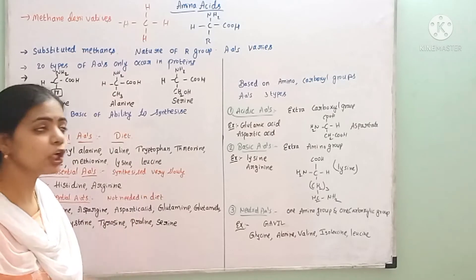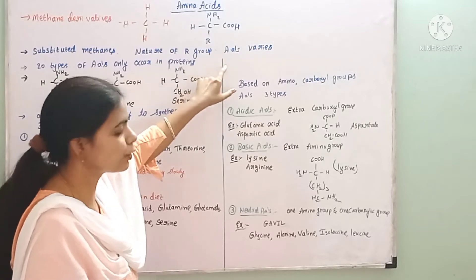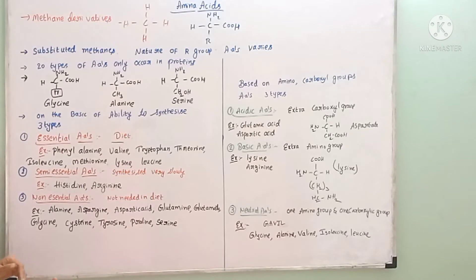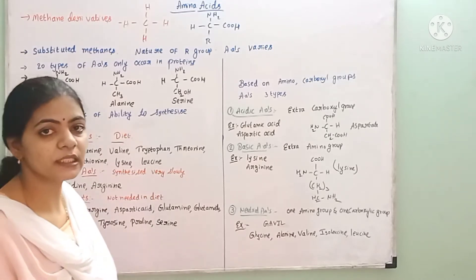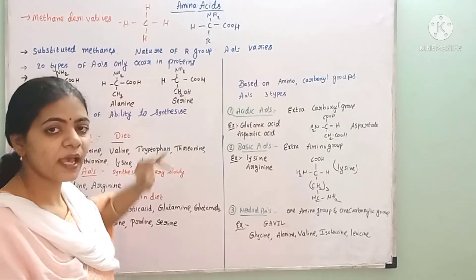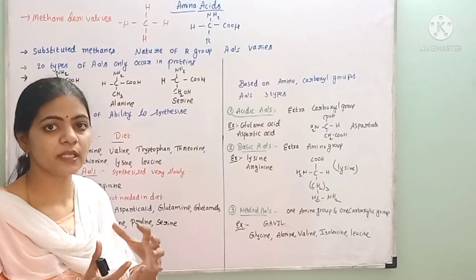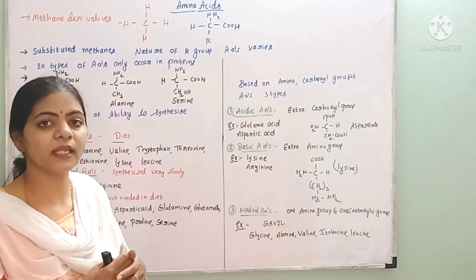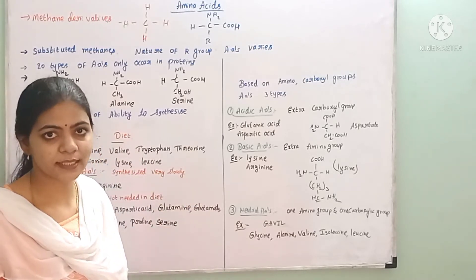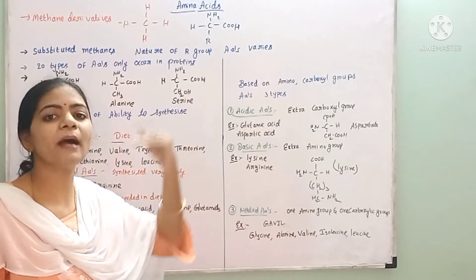Depending upon the nature of the R group, the chemical composition of different amino acids varies. There are nearly 20 types of amino acids that occur in proteins. Amino acids form proteins; proteins are bio-macro-molecules, while amino acids are the subunits and are called bio-micro-molecules.